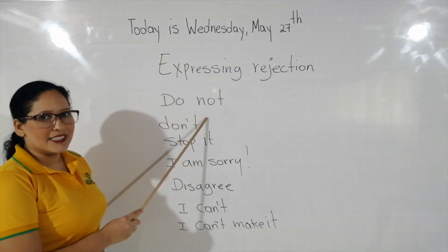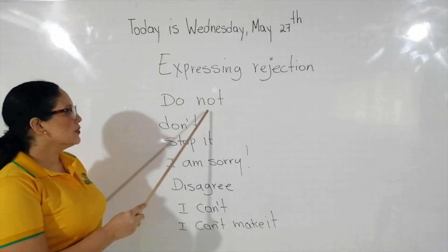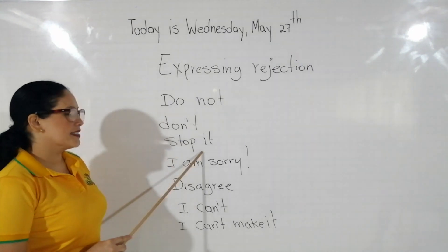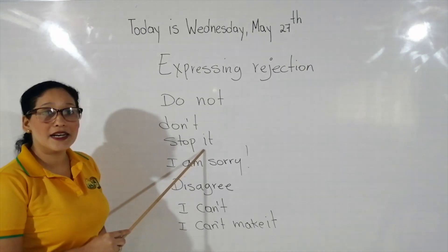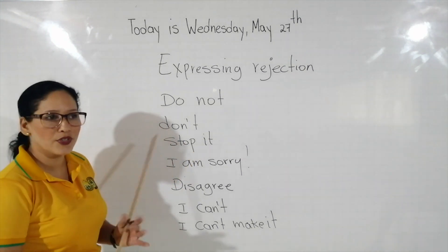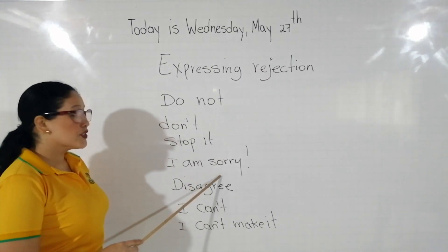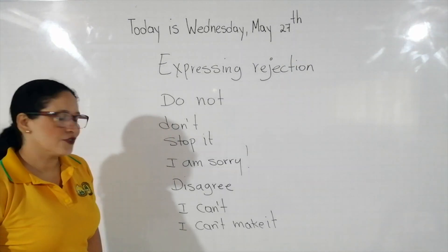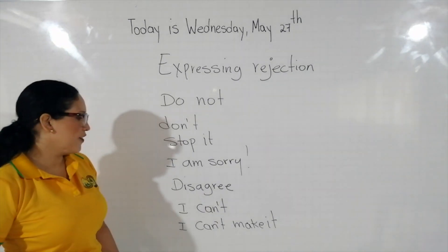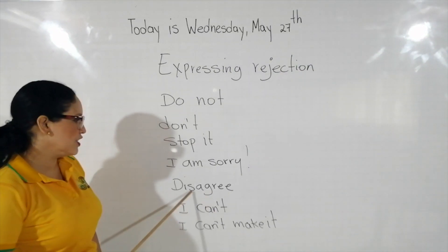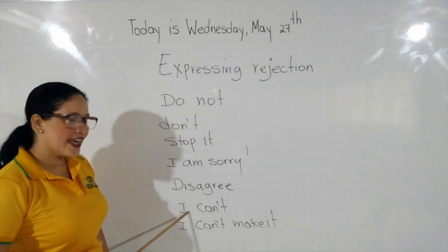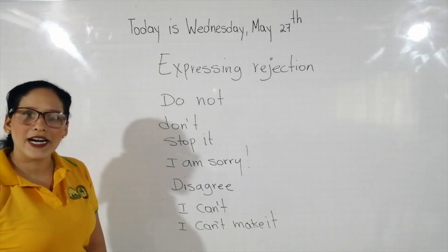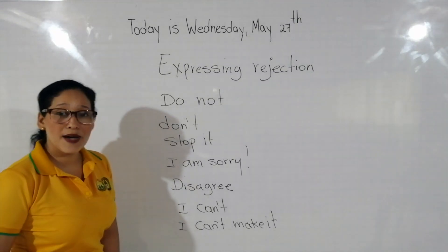Do not — ¿Qué significa? No. Don't — también significa No. Stop it — ¿Qué quiere decir? Para. I am sorry — ¿Qué significa? Lo siento. Disagree — ¿Qué significa? Desacuerdo. I can't — No puedo. I can't make it — No puedo hacer. Vamos a repetir una vez más la pronunciación.